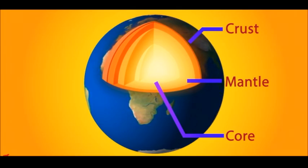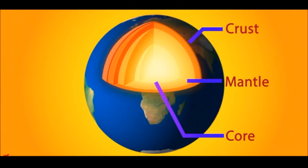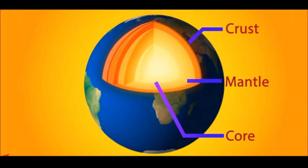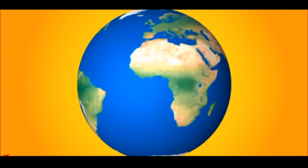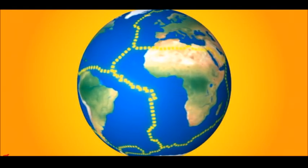Plate tectonics is a theory that Earth's outer shell is divided into several plates that glide over the mantle, that rocky inner layer above the core.